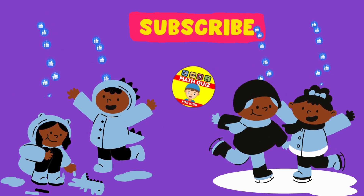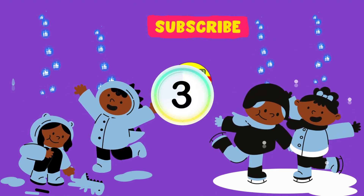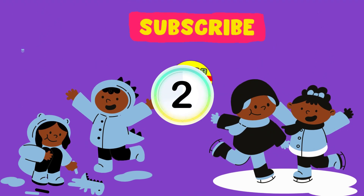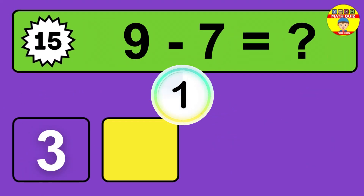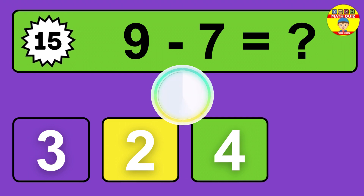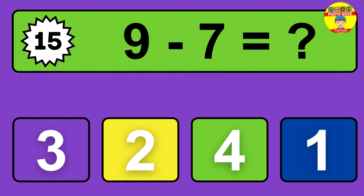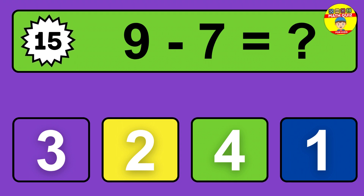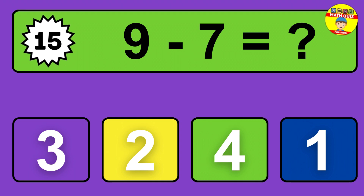Question sixteen: six minus three equals what? The answer is six minus three is three. Let's count it: one, two, three.